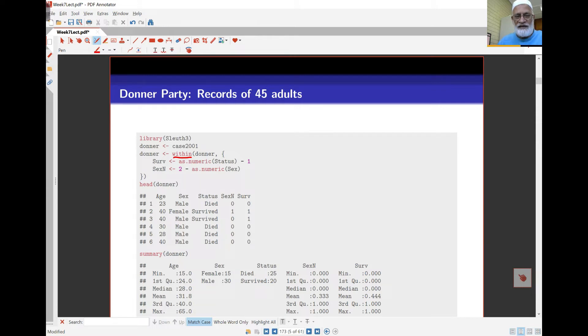At the moment we had Sex as male or female and Status was died or survived. If we take Status as numeric, instead of converting this to 1, 0, it converts to 1, 2. It would have converted Died to 1 and Survived to 2 in the usual alphabetical order. So subtracting 1 from that makes it a 0, 1 variable.